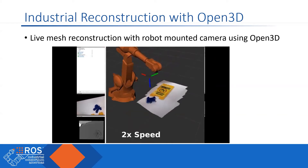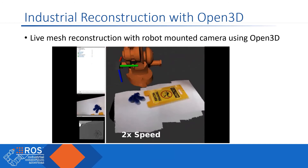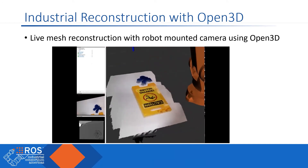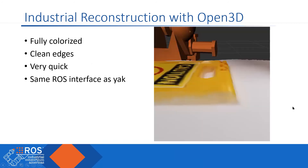Previously with Yak, we did not have the ability to have color in our images. Overall, this can generate a fully colorized mesh with clean edges. It behaves really consistently and is very fast — the video was run at two times speed, mainly to allow the robot to move slowly enough to accurately capture the TF frame data of the camera. Because it works with ROS, we're able to maintain the exact same interface that Yak had, with the same service calls and fast mesh output.